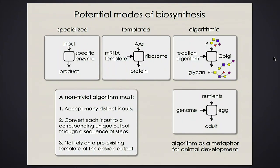Biology has many ways to make specific products. One way: you give an enzyme an input chemical, and the enzyme carries out chemistry on that input and makes a product. Enzymes are very specific — give it some other input and it won't do anything; give it the correct input and it makes the correct product.